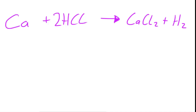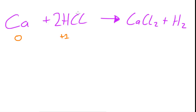Now if we analyze this equation and look at the oxidation number changes: calcium here is not combined with anything, so its oxidation number is zero. Hydrogen is combined with chlorine, and chlorine is in group seven so it wants to steal one electron, making hydrogen plus one to balance out the minus one charge on the chlorine.